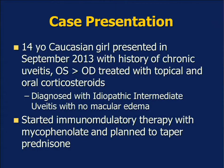I'm going to finish with one case from the clinic done within the last few months. This is a 14-year-old Caucasian girl who presented in September 2013 with a history of chronic uveitis, left worse than right, treated with topical and oral corticosteroids. After evaluation, we diagnosed her with idiopathic uveitis with no macular edema at that time, and started immunomodulatory therapy with mycophenolate with a plan to taper her prednisone.